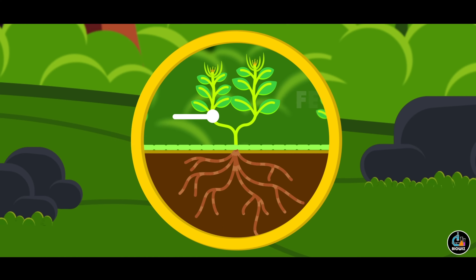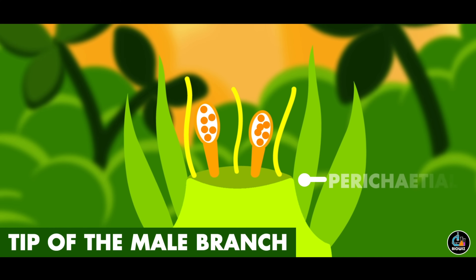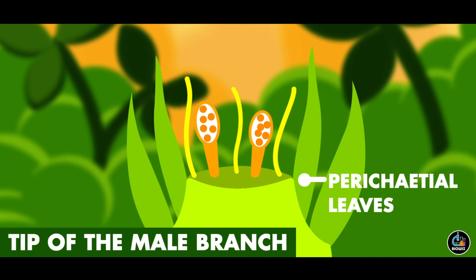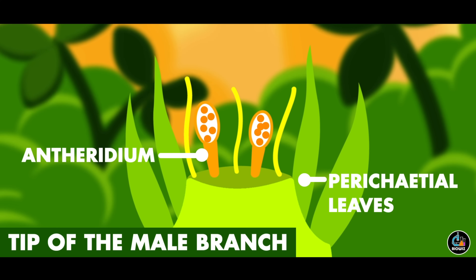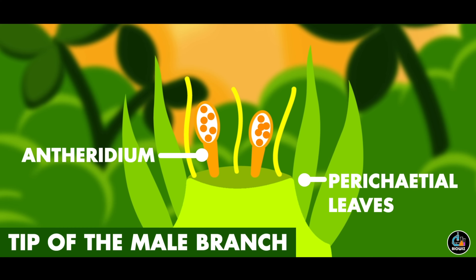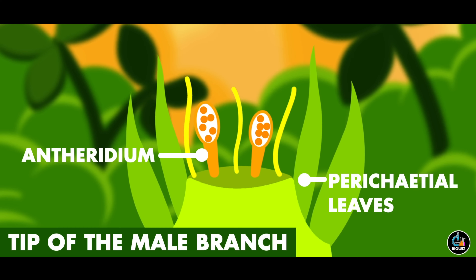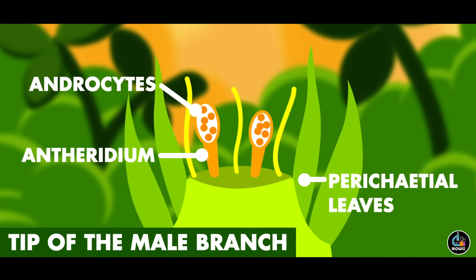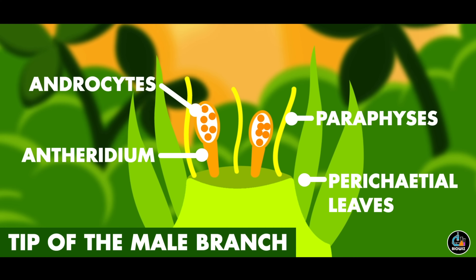The tip of the male branch is surrounded by a group of leaves called perichaetial leaves. At the tip, a large number of orange-colored male sex organs called antheridia are present. Each antheridium is surrounded by a single layer of sterile cells called the jacket. This jacket encloses a mass of cells called androcytes. The tip also bears thin hair-like outgrowths called paraphyses, which hold water to help in the release and transfer of male gametes.